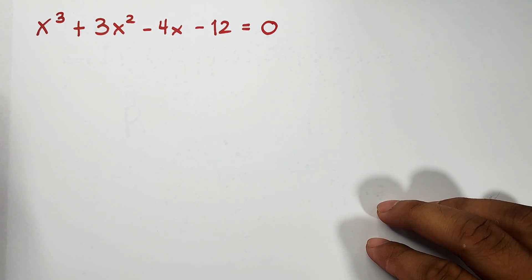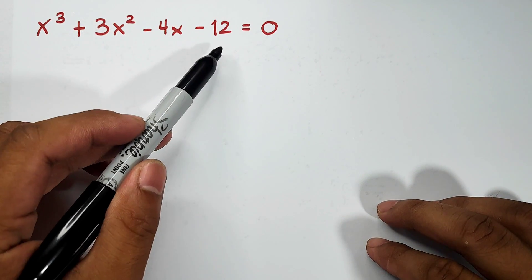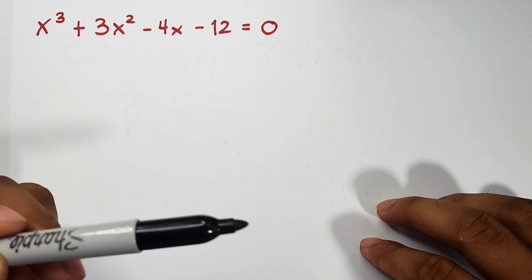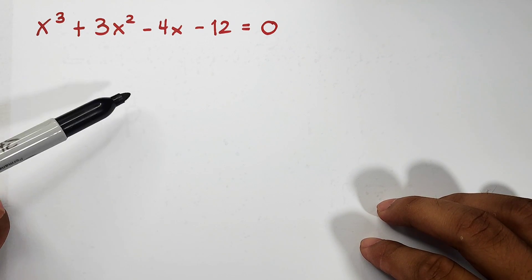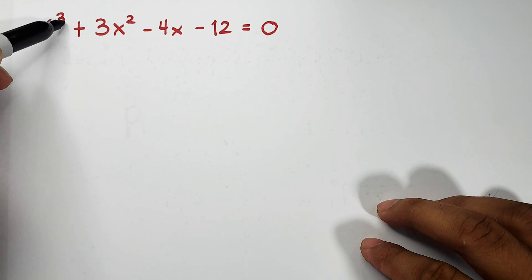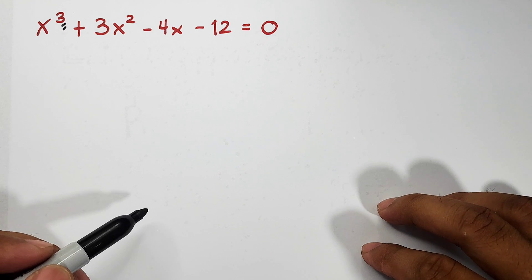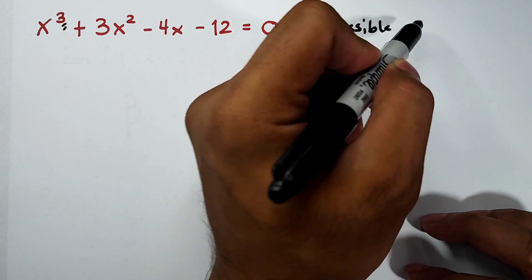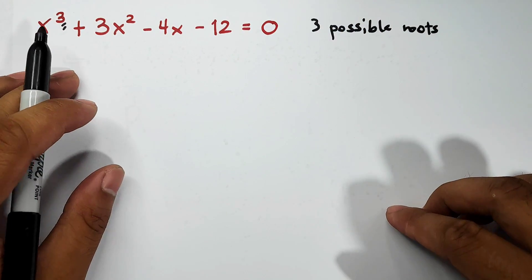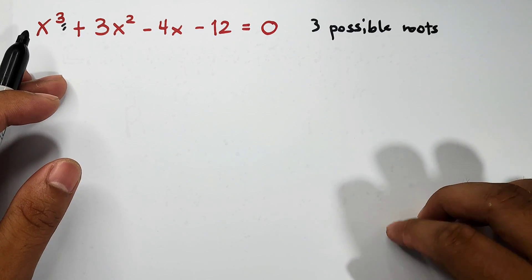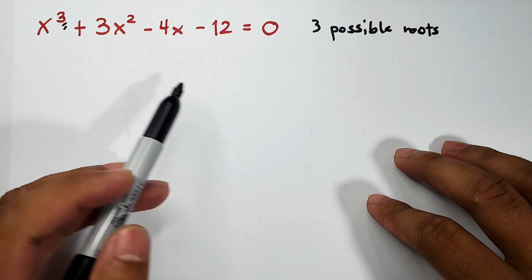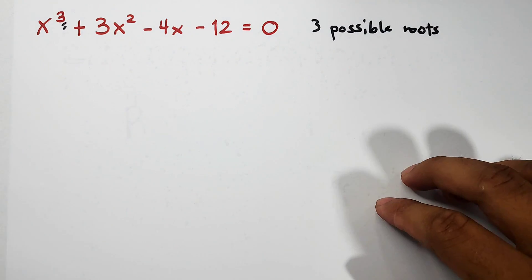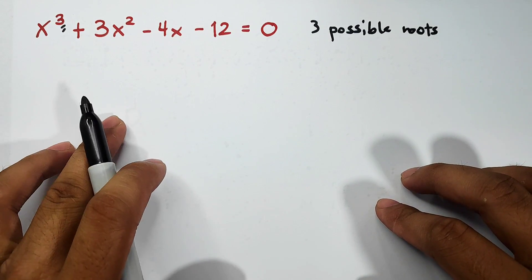The first equation is x cubed plus 3x squared minus 4x minus 12 equals zero. By the way guys, when you're solving polynomial equations, the target is to find or solve for the value of x or the roots of the equation. Now if you notice, the degree or the highest exponent of the variable x is 3, which means you have 3 possible roots. This depends on the degree of the polynomial. This one is quite difficult compared to quadratic equation because its degree is 3 and we have 4 terms.